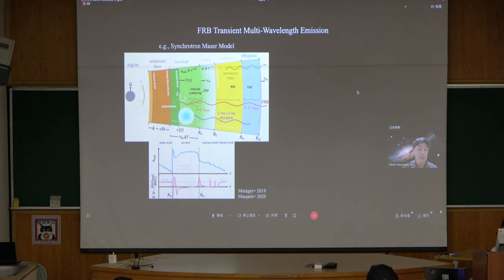Here I show one example, which is the synchrotron maser model. You have a central engine, like a magnetar, emitting a relativistic flare with flare energy E, that interacts with the surrounding medium, which was likely ejected in the previous flare. This shock interaction creates synchrotron maser emission, which we observed as an FRB.